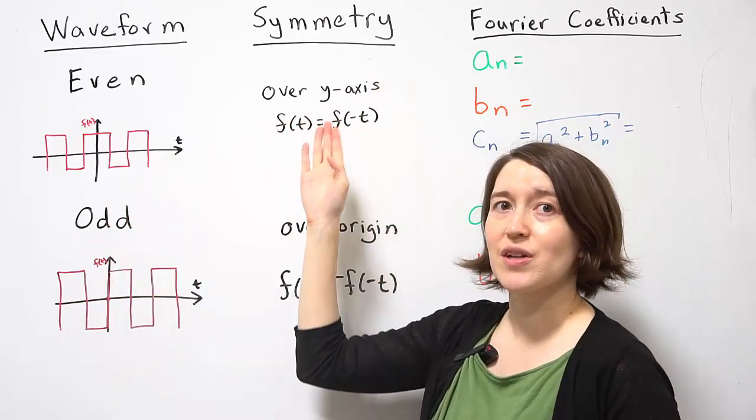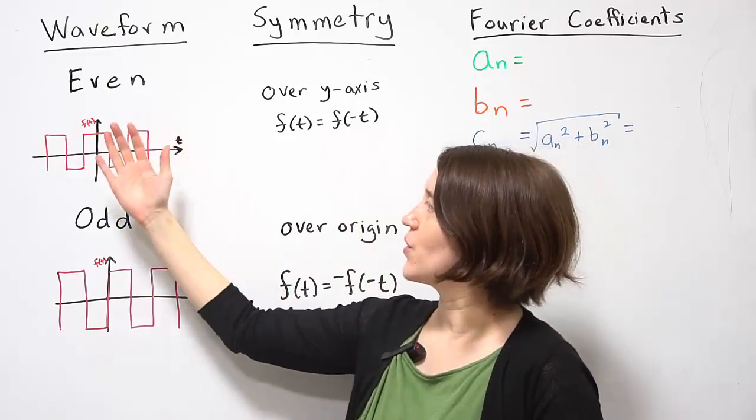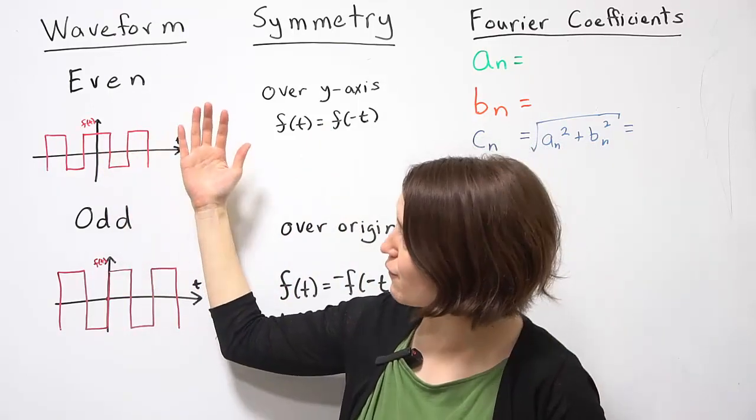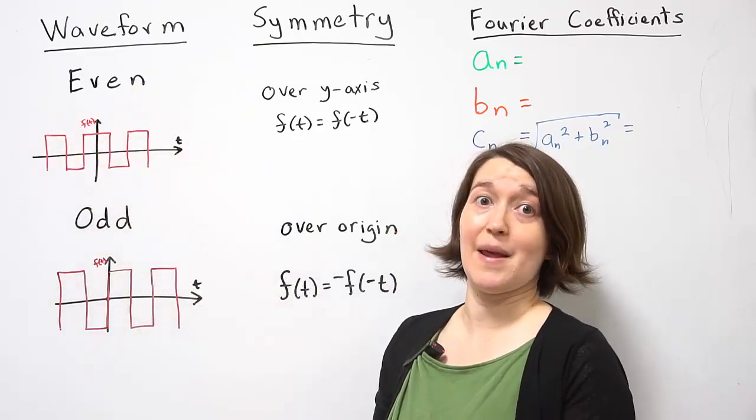The specific symmetry is that it's symmetric over the y-axis. So if you took everything on the positive part of the time domain and you folded it over the y-axis, the function would be exactly the same.